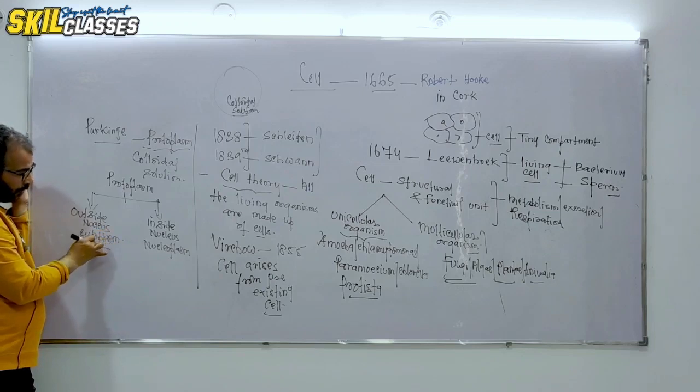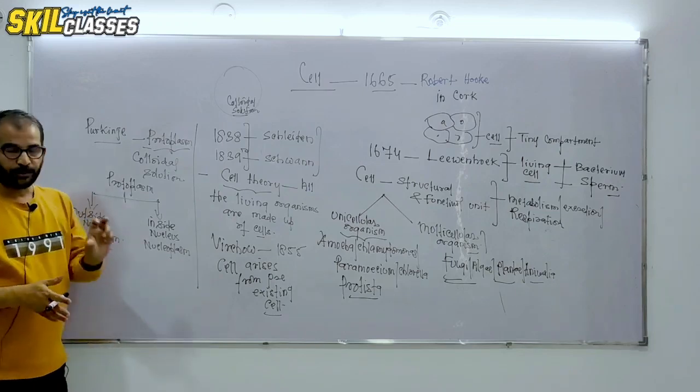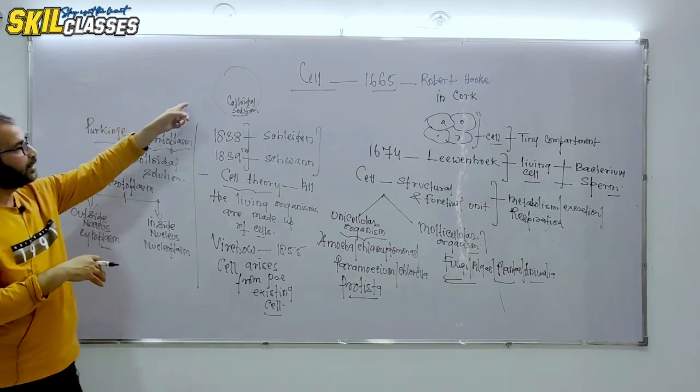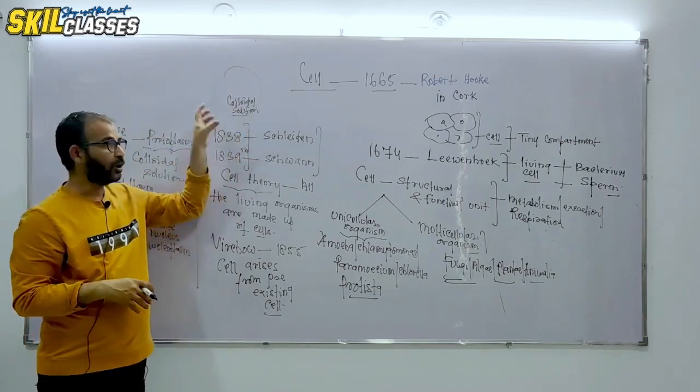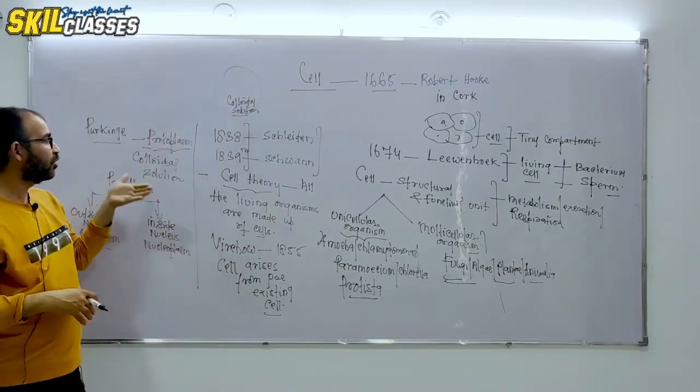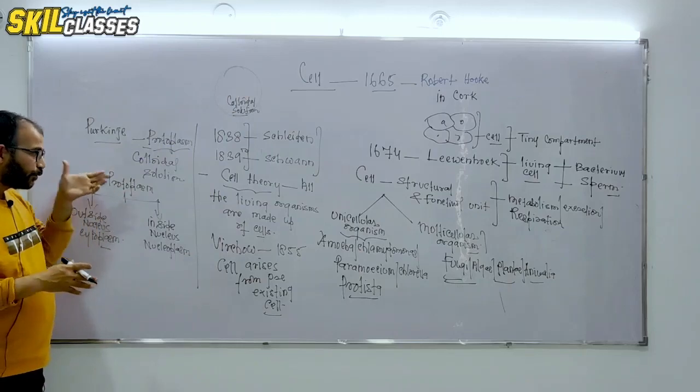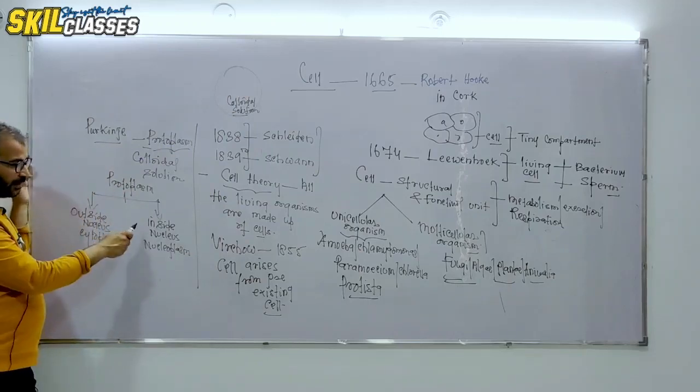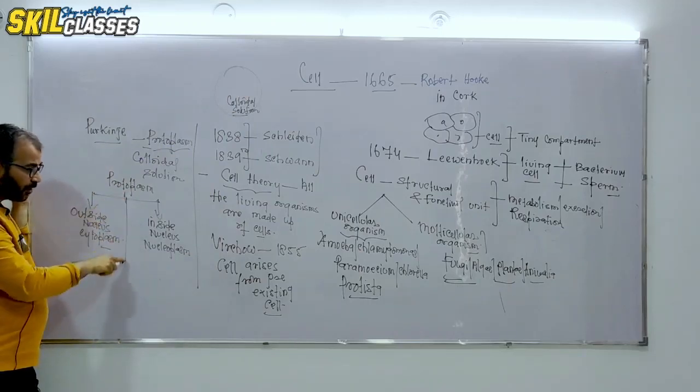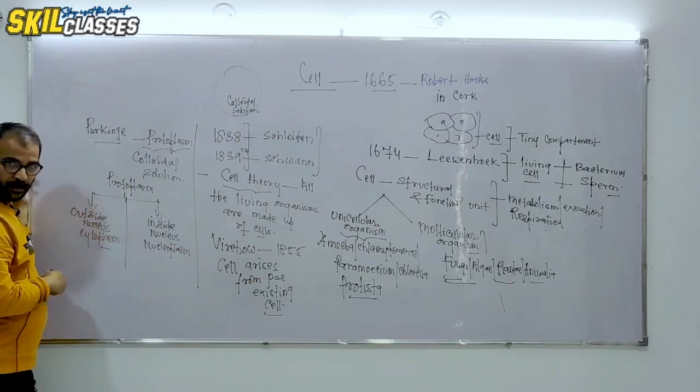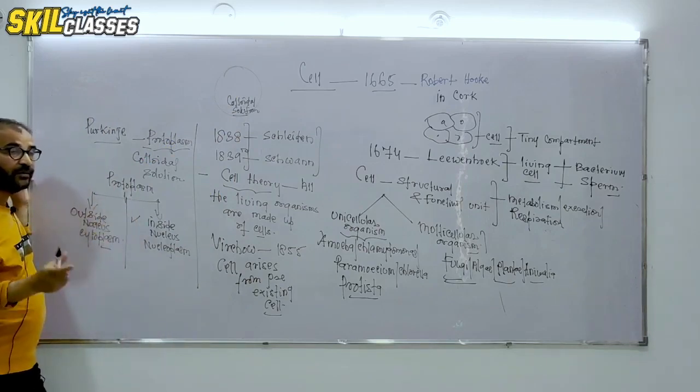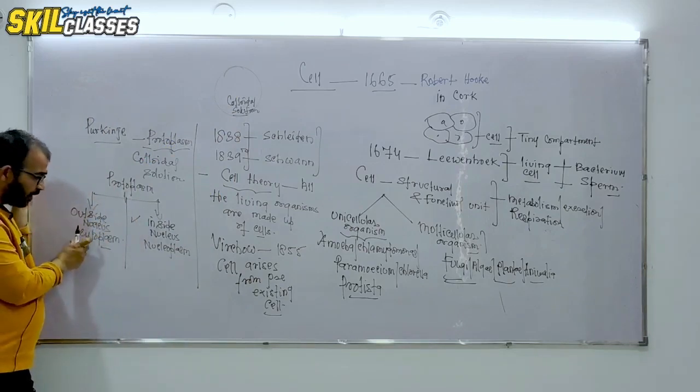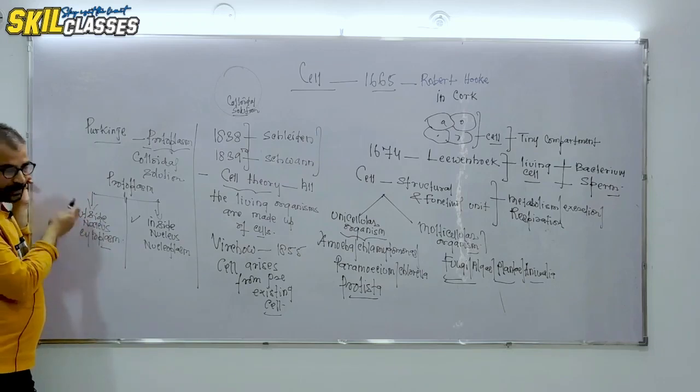What we said is that the protoplasm inside the plasma membrane, the colloidal solution is called protoplasm. Protoplasm is further divided into the part present inside the nucleus, which is called nucleoplasm, and the solution outside the nucleus but inside the plasma membrane, we call it cytoplasm.